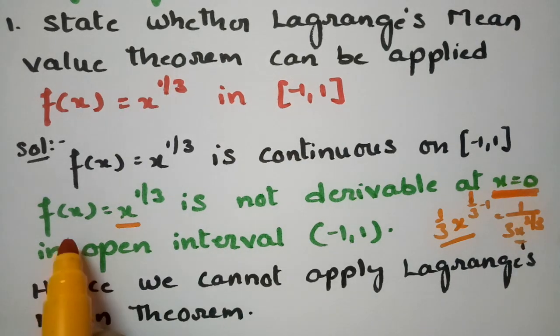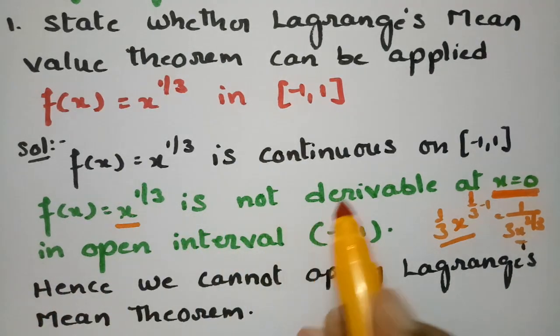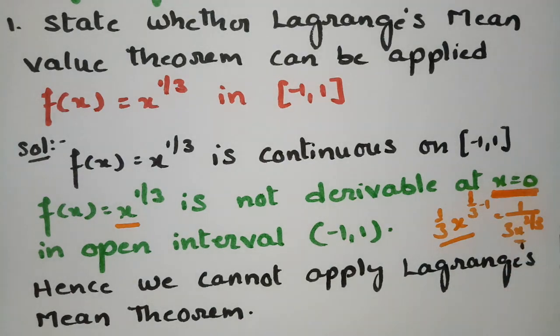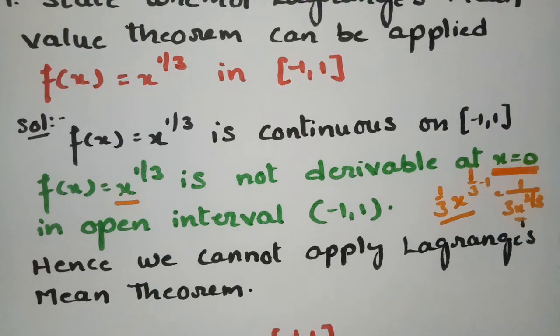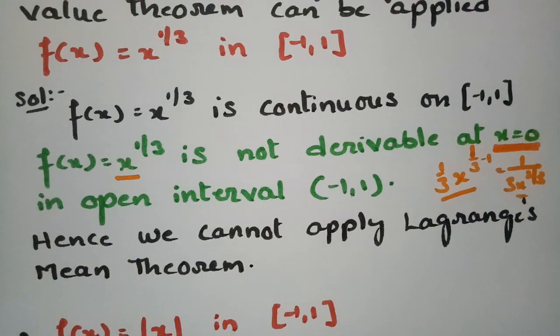Therefore f(x) = x^(1/3) is not derivable at the point x = 0 in the open interval (-1, 1). Hence we cannot apply Lagrange's mean value theorem.